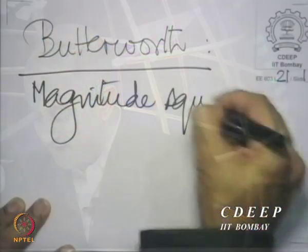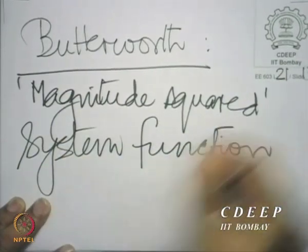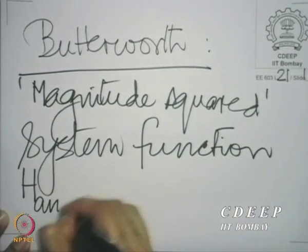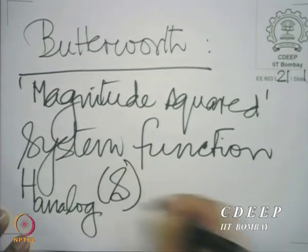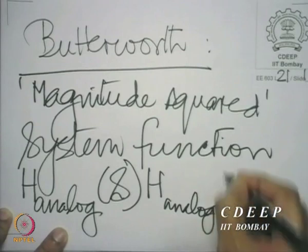That seems to be the most sensible way to do it. Since we are dealing only with magnitudes, we shall not design the system function of the analog filter directly. What we will design instead is what is called the magnitude squared system function. A magnitude squared system function is essentially H_analog(S) multiplied by H_analog(-S), and we will explain why that is the case.